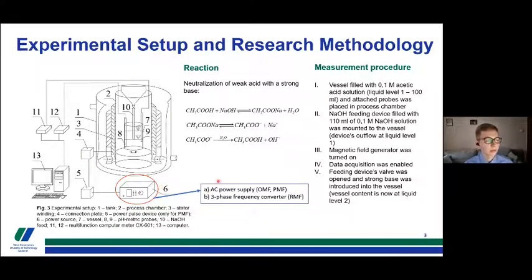For oscillating magnetic field, it's AC power supply. For pulsating magnetic field, it's AC power supply together with the power pulse device, which cuts off and enables the current flow to the winding in a specified amount of time. For the rotating magnetic field, we used the three-phase frequency converter.